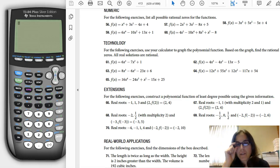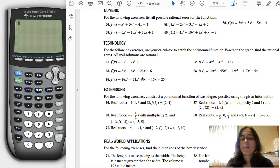Mount 31. I had a question coming off of section 5.5, number 65. So here are the directions. For the following exercises, use your calculator to graph the polynomial. Based on the graph, find the rational zeros, and all real solutions are rational.